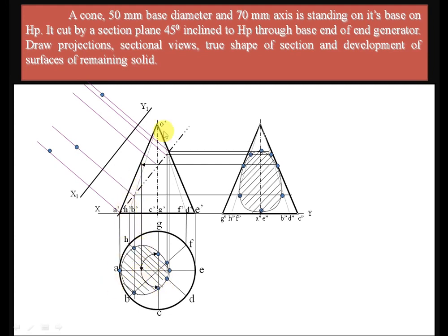Take the compass and from the XY reference line take the distance to point H in the top view; mark this length on the perpendicular from H' on the true shape. The same distance applies to point B. Take the distances from the XY reference line to D' in the front view for locating the corresponding true-shape point on that perpendicular.